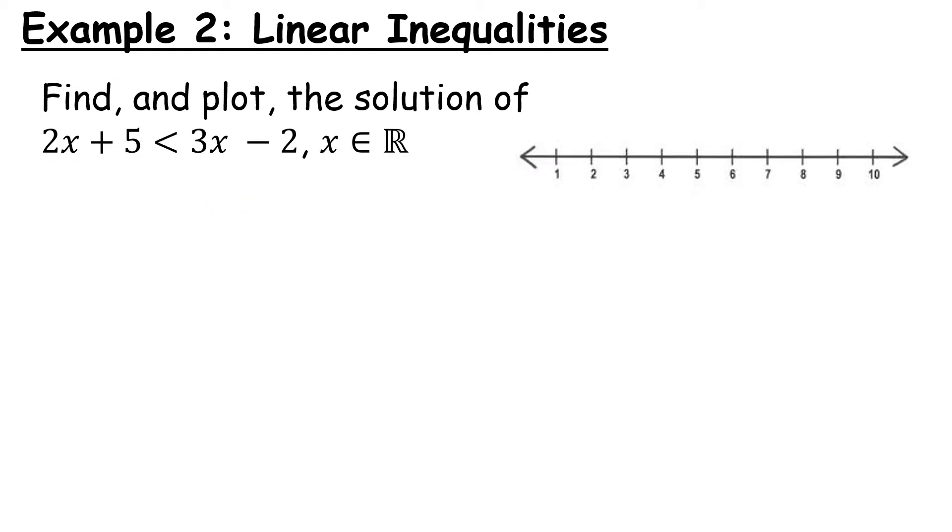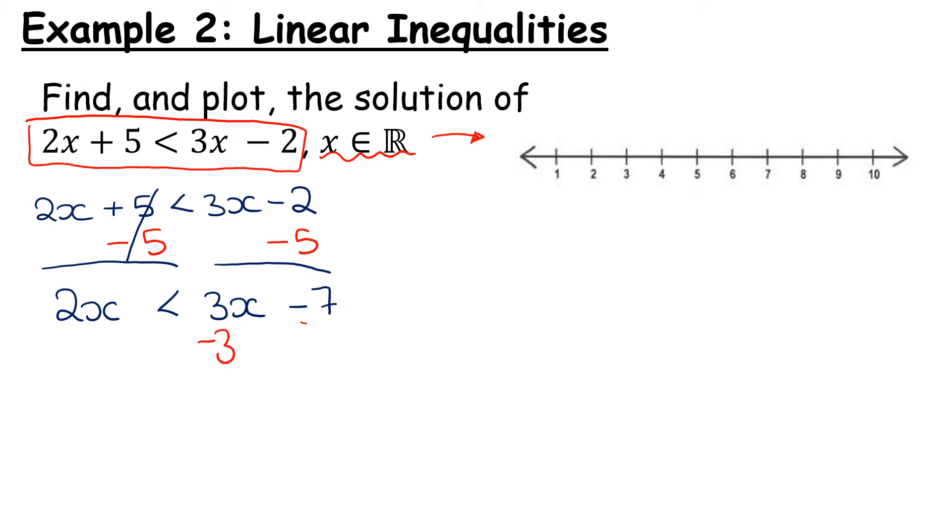So what happens if we have a more complex linear inequality? Again I'm going to box the inequality itself so we don't get confused. First thing I'm going to do is get my letters on the left, numbers on the right. I'm going to work from the left, which means I'm going to take away 5 from both sides just like I would if it was an equation. And I have 2x is less than 3x minus 7. Now I want to get rid of this 3x, I'm going to take away 3x from both sides and that leaves me with minus x is less than minus 7.